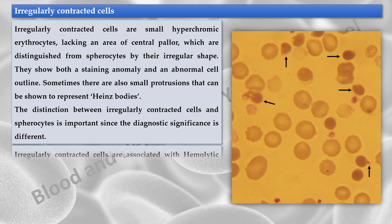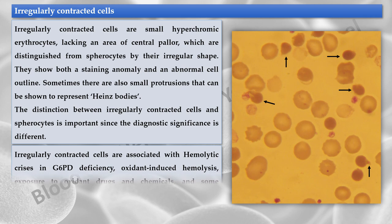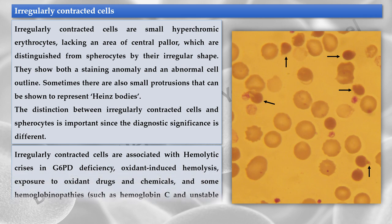Irregularly contracted cells are associated with hemolytic crises in glucose-6-phosphate dehydrogenase deficiency, oxidant-induced hemolysis, exposure to oxidant drugs and chemicals, and some hemoglobinopathies.